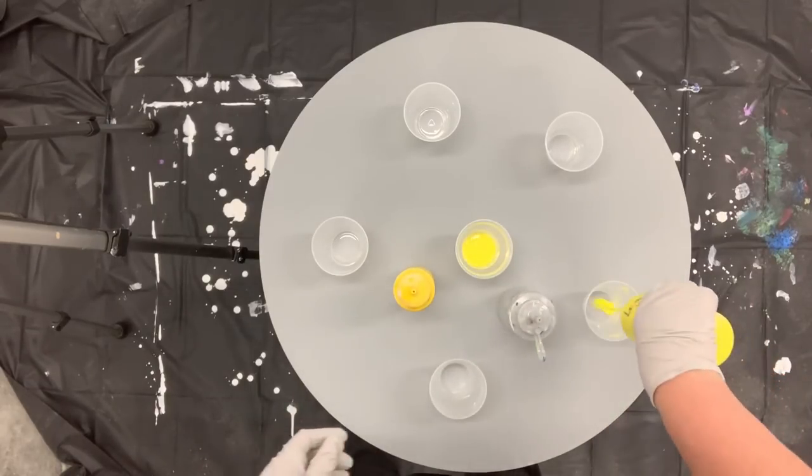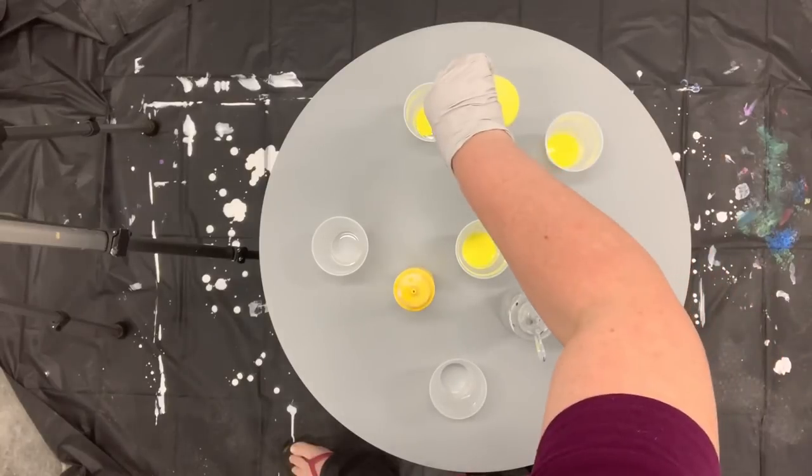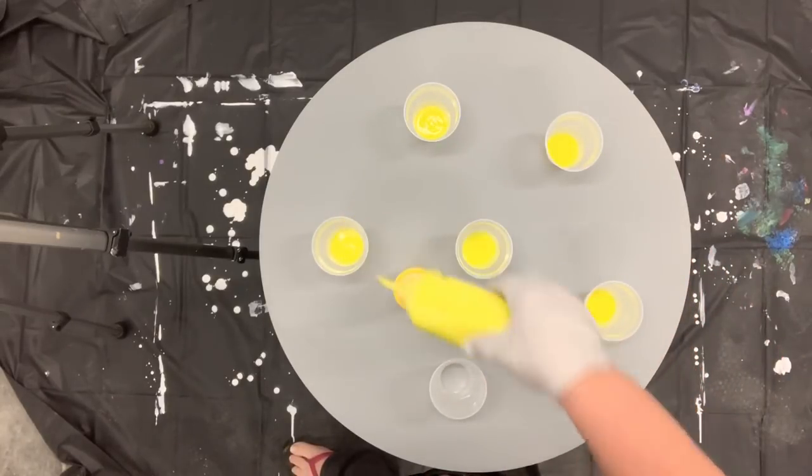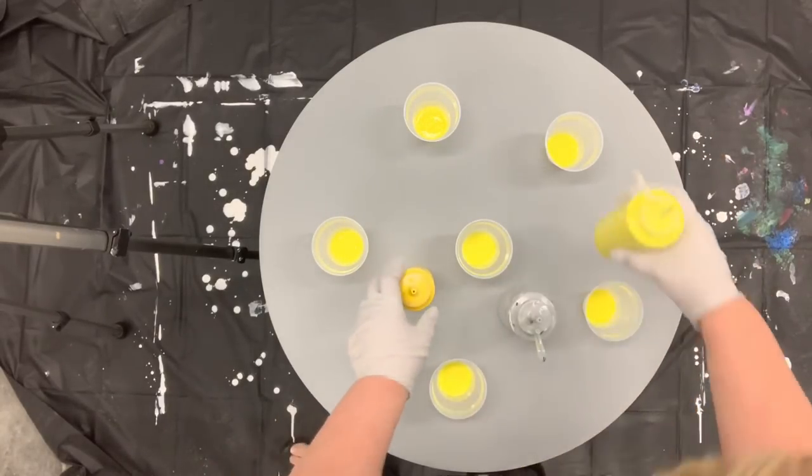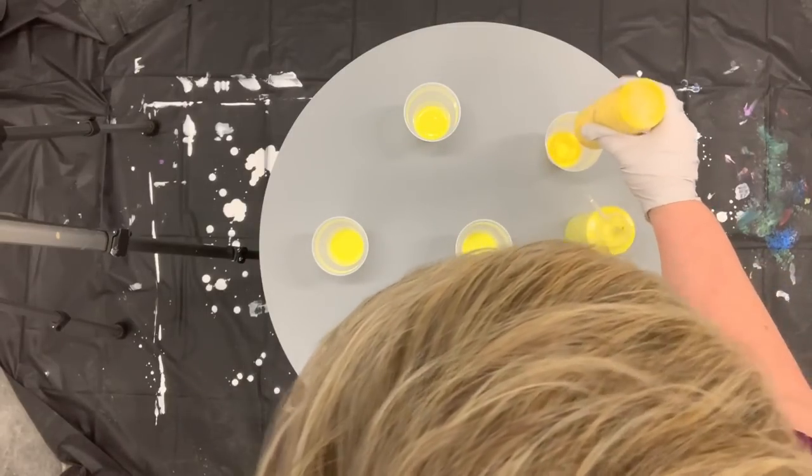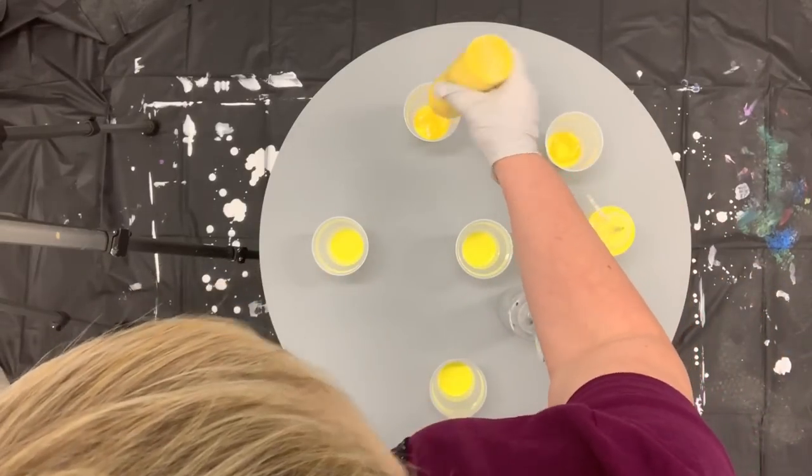I'm just going to start with the lemon yellow in each cup and continue to layer my paints up. Next I'll go in with the darker yellow, the yellow medium.